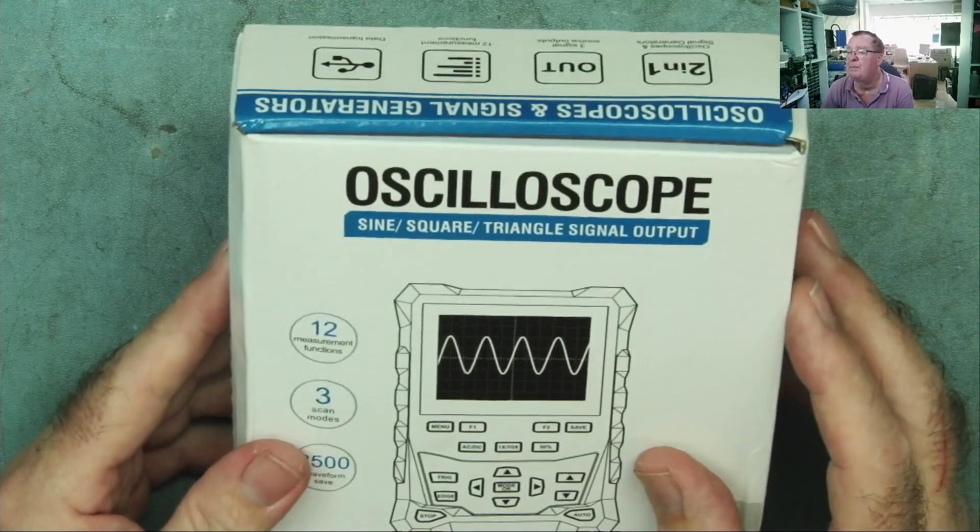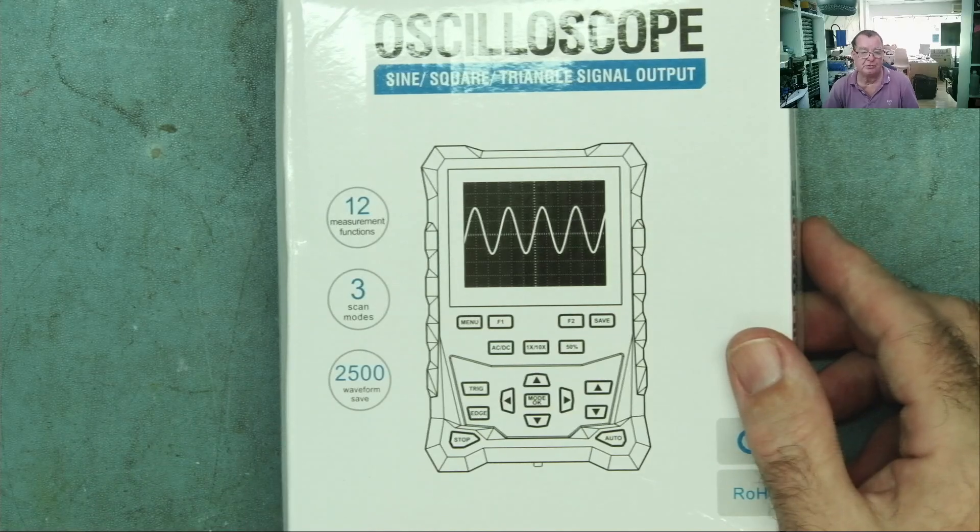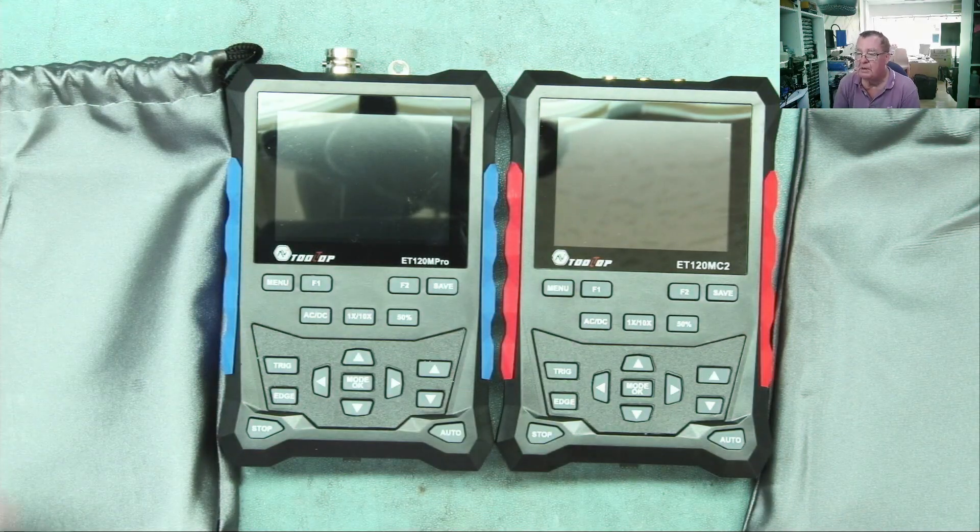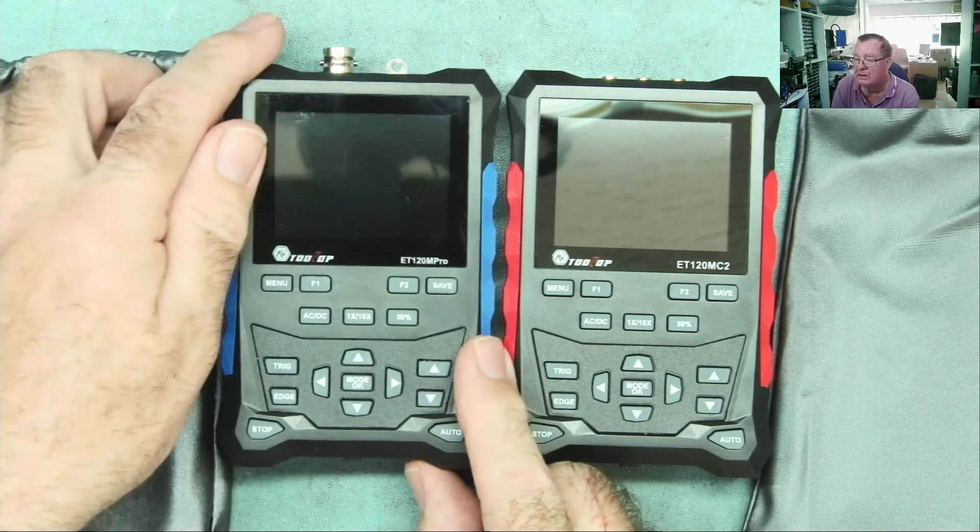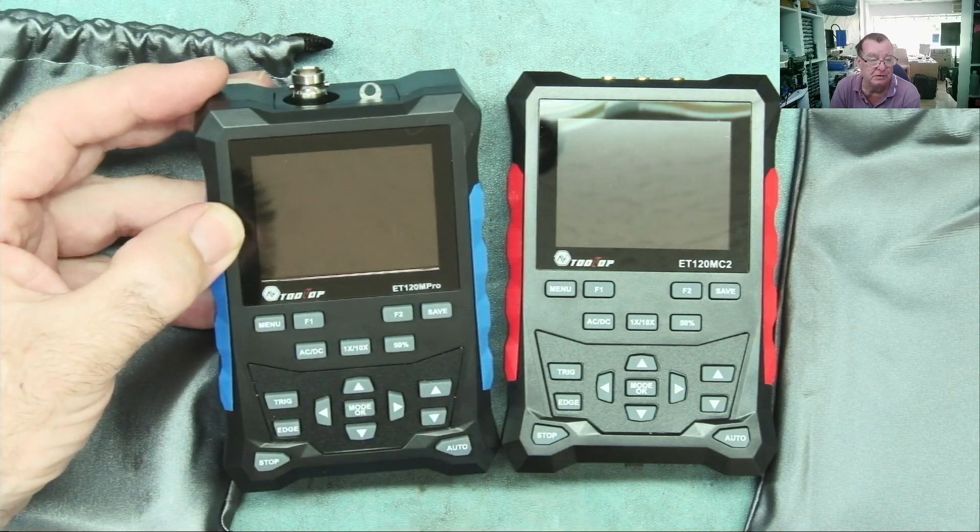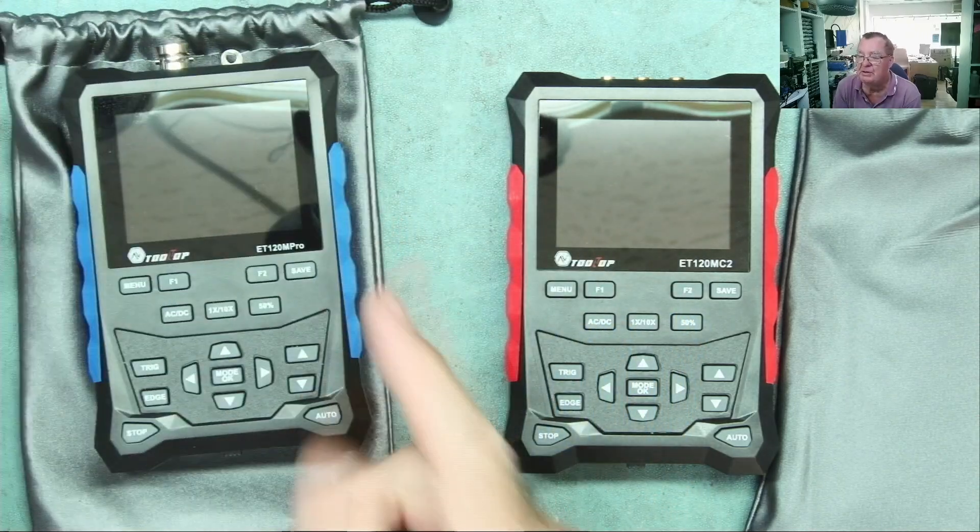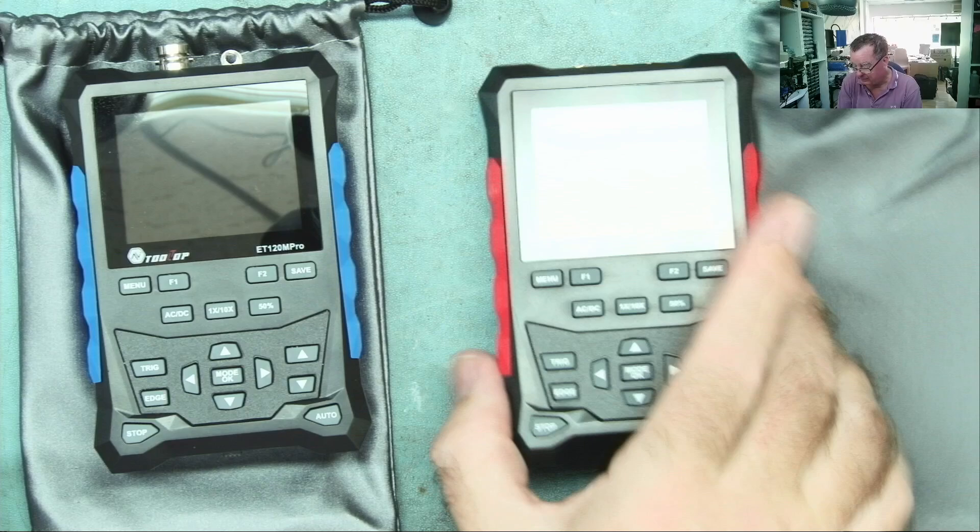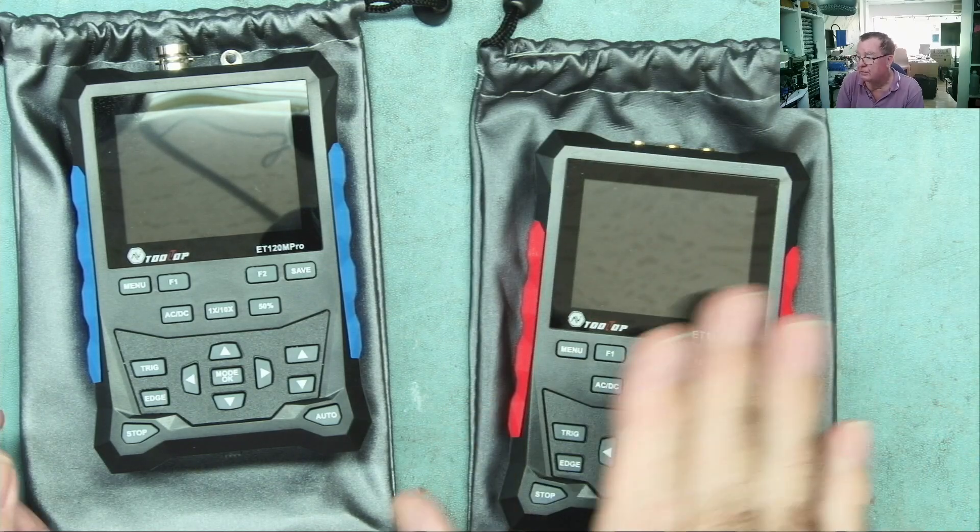What's the difference? Well, this is a single channel scope, and this is a dual channel scope. That's the basic difference between the two. Let's compare them. This is the previous one that I reviewed and I will link that video in the description.